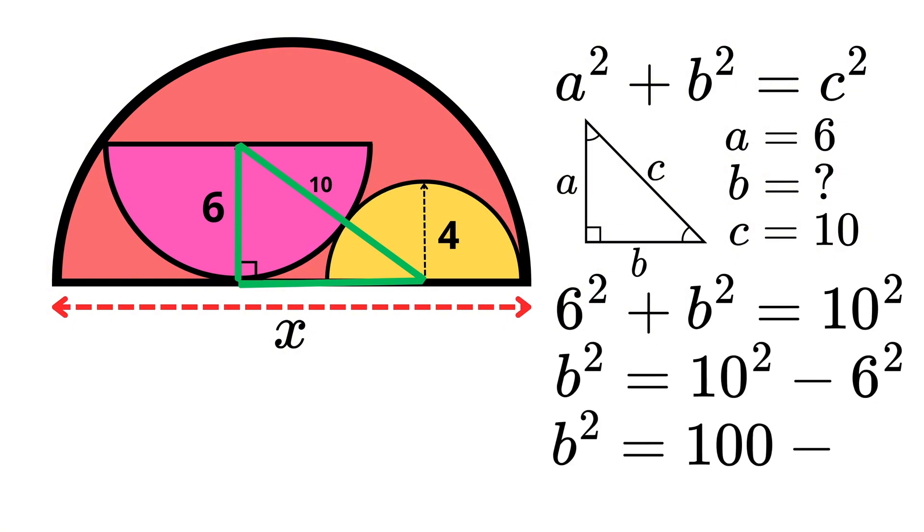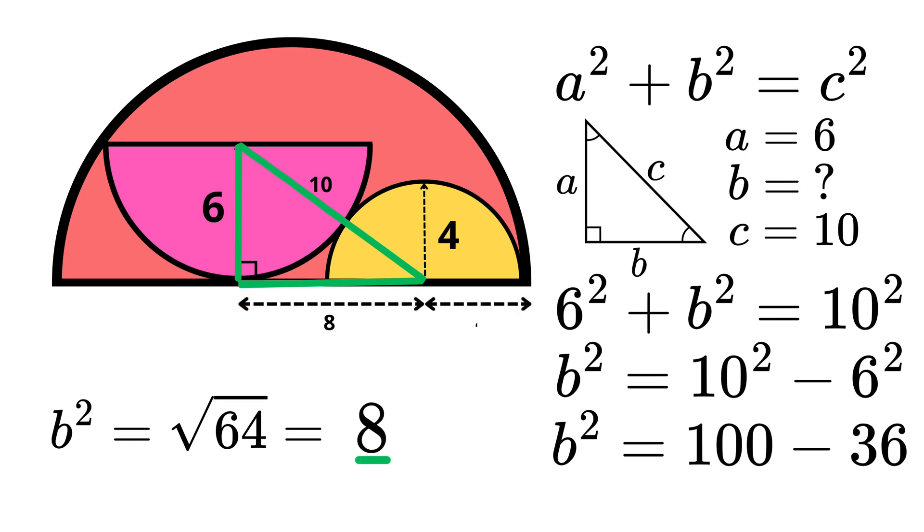Working through and solving for b, we find that our third length is 8 meters. We can also say that the distance from the midpoint of the yellow semicircle to the edge is 4 meters, since we know its radius.